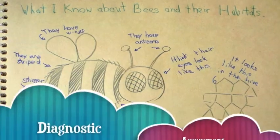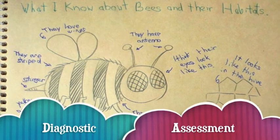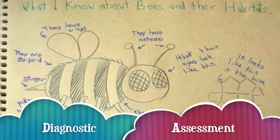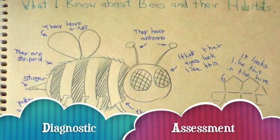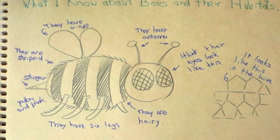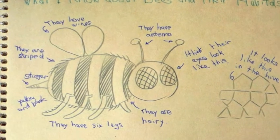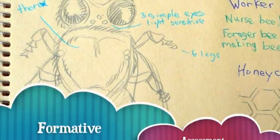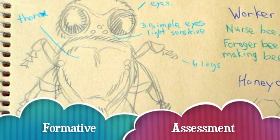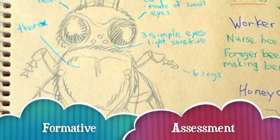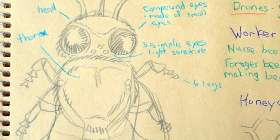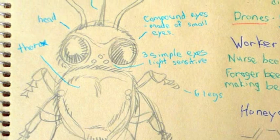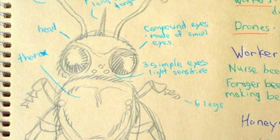Notebook drawings can also be used diagnostically and formatively. By asking students to draw a flower, insect, or a human organ at the beginning of a unit of study, and then again near the end, the teacher can get clear visual data as to how much the students have learned about the structures of these objects.